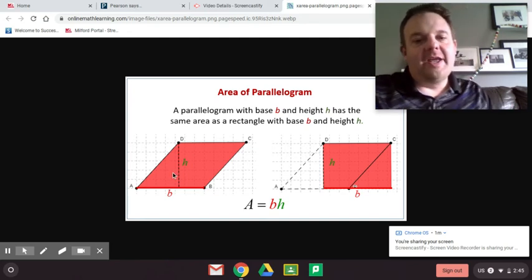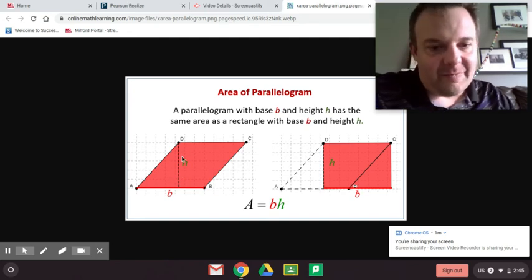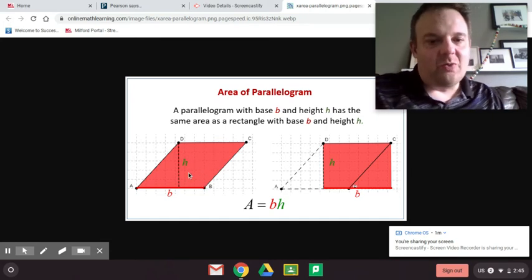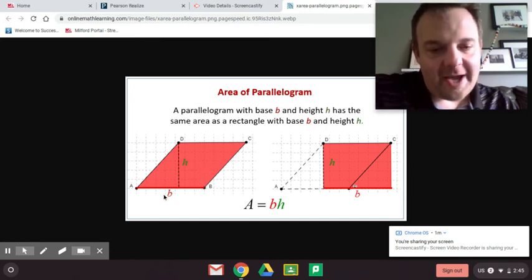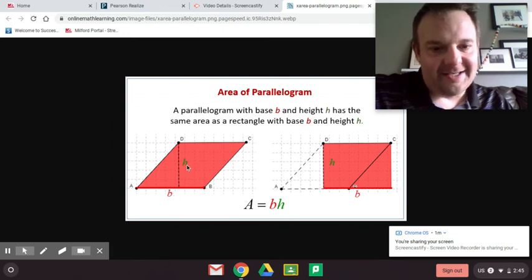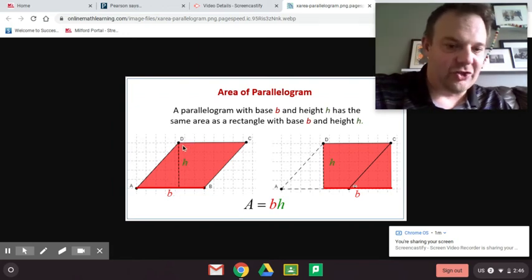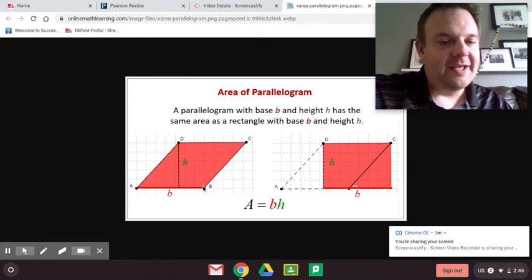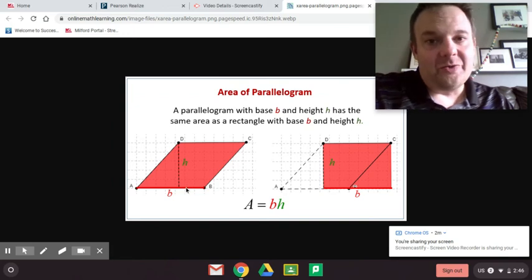So this triangle here is equal to this triangle here. So to find the area of a triangle, you would do base times height and then divide it by two to get just one of these triangles. And the height, again, is perpendicular to the base. Or you could do, for the area of a triangle, one half base times height.